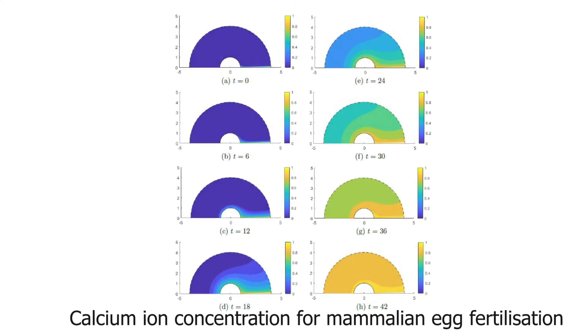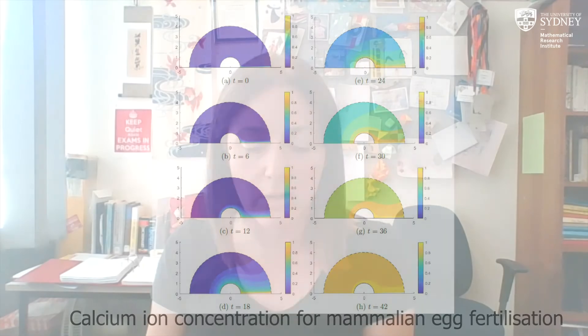The researchers arrived at an analytical solution in 2019. The model can also be applied to mammalian egg fertilization. Using non-classical symmetry techniques that had been used before, Hajek could find analytic solutions to this problem.